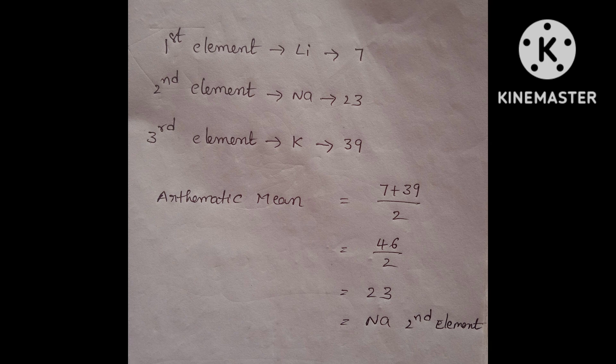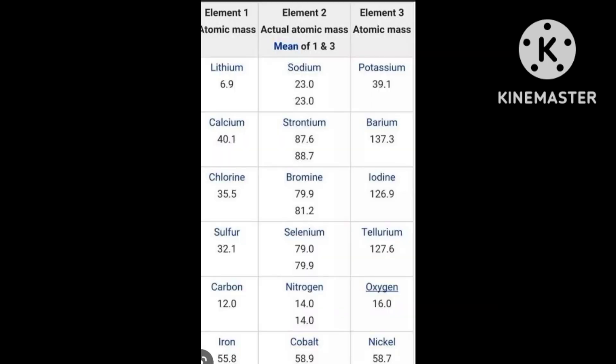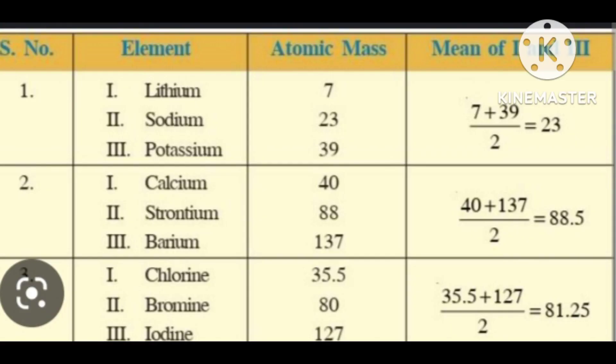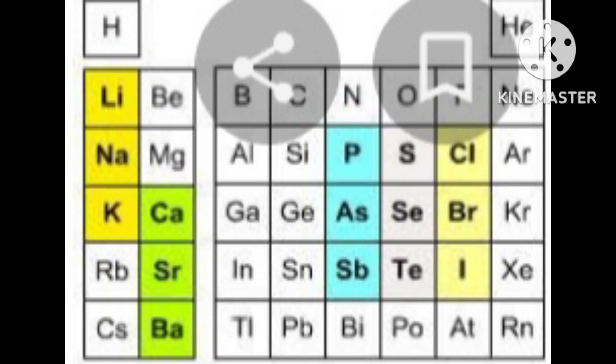So 23 is the mass of sodium, confirming sodium as the second element in the triad. However, his classification was applicable only for a few elements with similar chemical properties. He failed to arrange all elements because not all elements follow Döbereiner's triad rule.